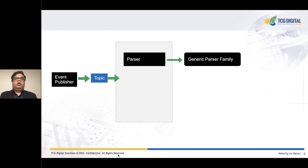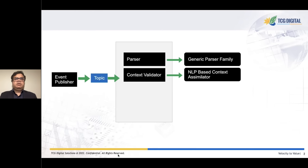Then we have the context validator, which is based on a natural language processor. Think of it as a pair of eyes scanning all messages that are coming in and looking for errors — it reads all messages and learns from them. For example, if a 3-letter airport code in a message is misspelled, the context validator would be able to identify that and suggest alternatives. It can also be configured to auto-correct those messages.